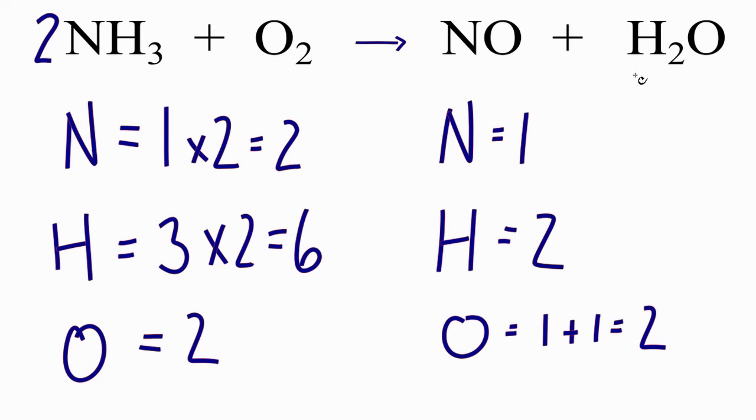On the product side, I have two hydrogens. So if I multiply two times three, that will give me six here. So I have six here and six here. So I'll put my three here. Three times two gives me six.